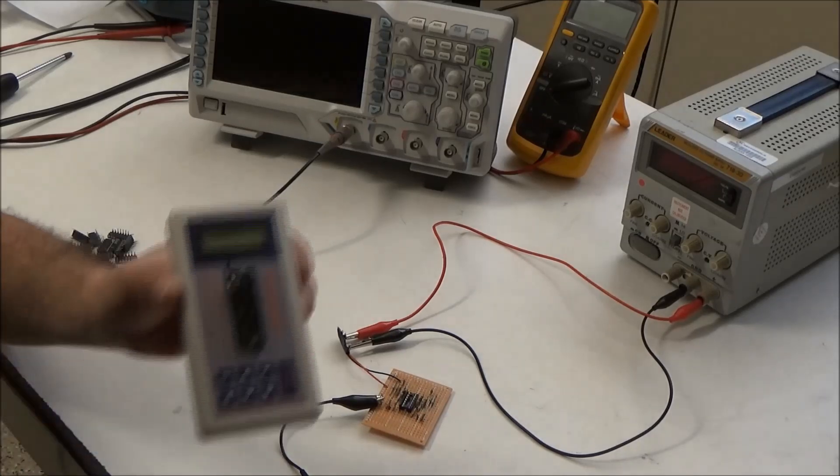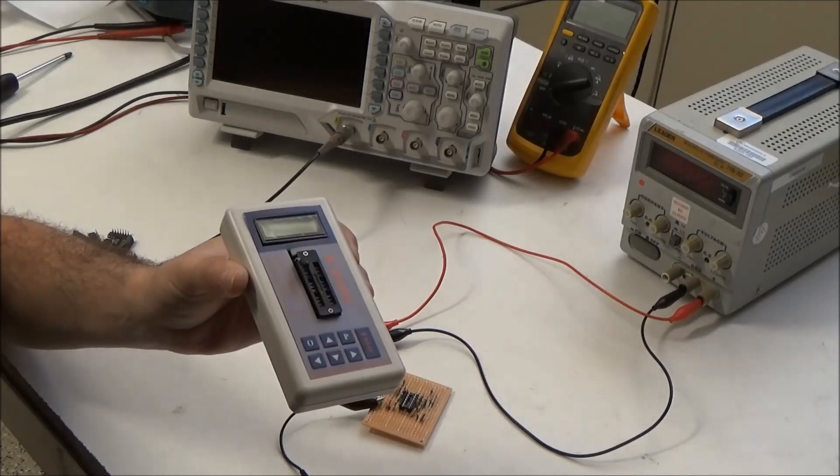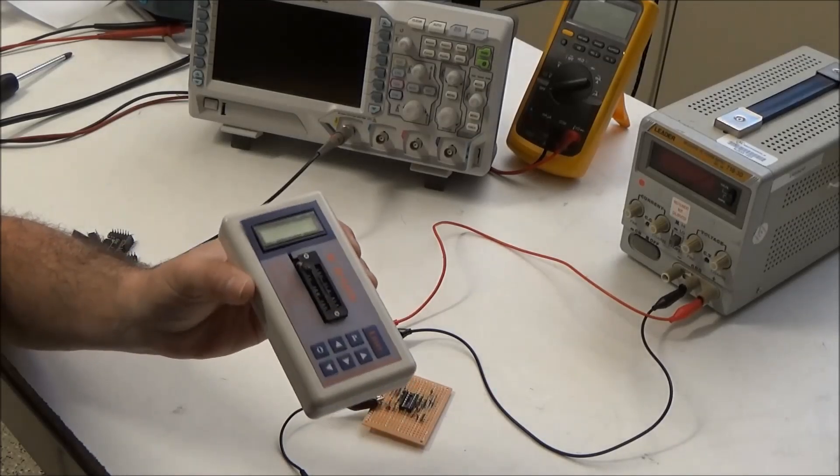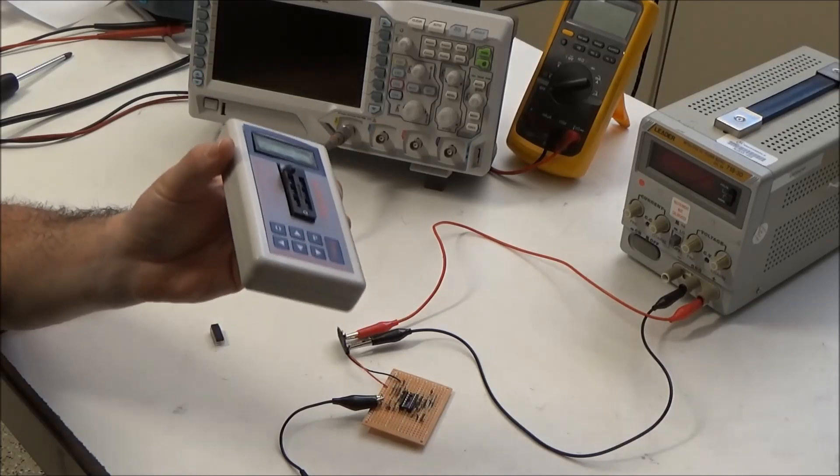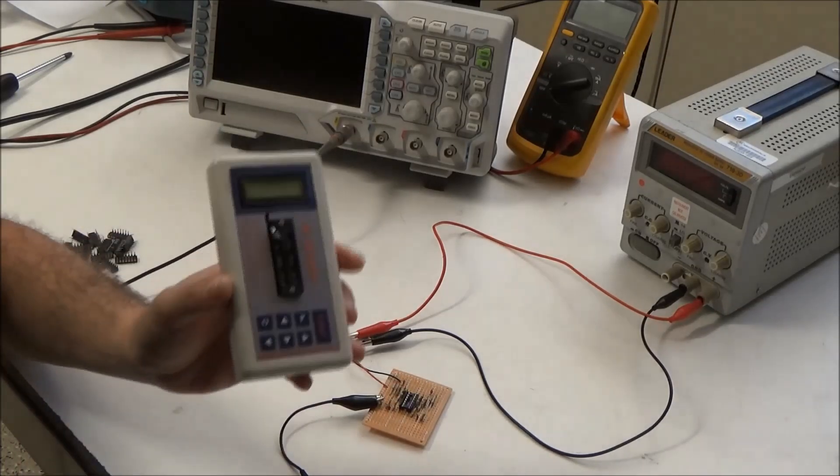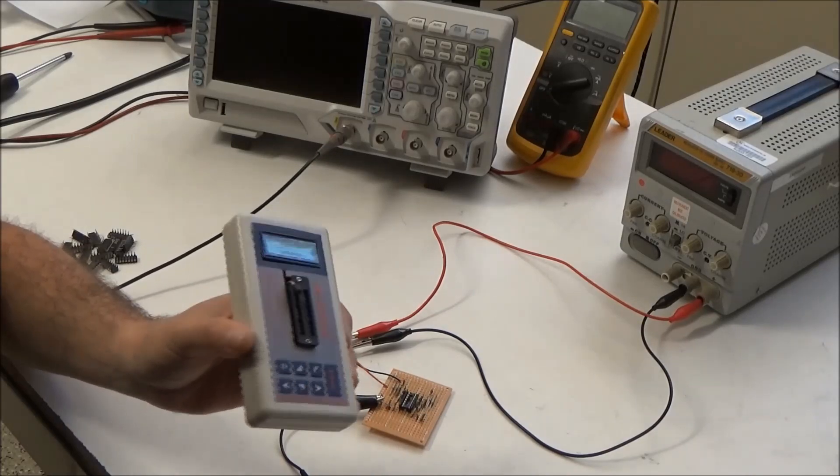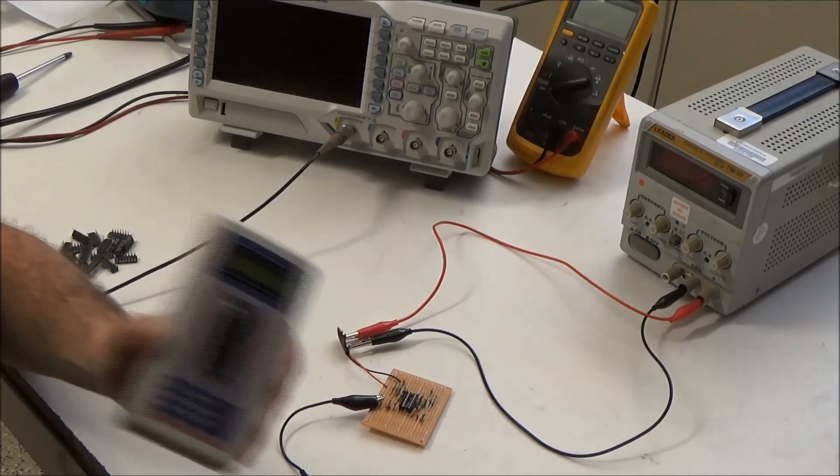There's cheaper IC testers like this one, which tests some digital and a few linear IC chips. This device costs about $50 and can test some but not all of the op-amps that I commonly use. But it just gives a chip level pass or fail, and I kind of want to know exactly what failed on the chip.